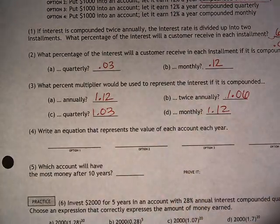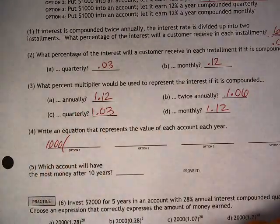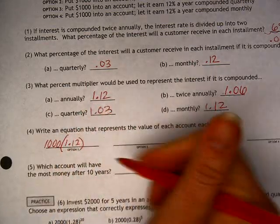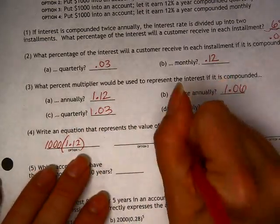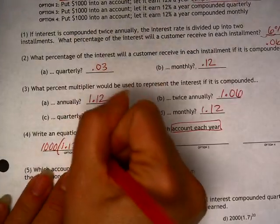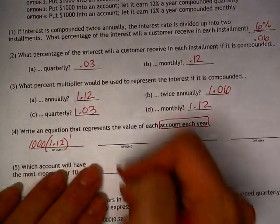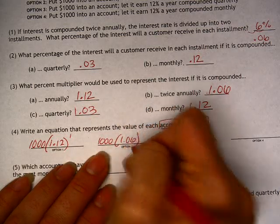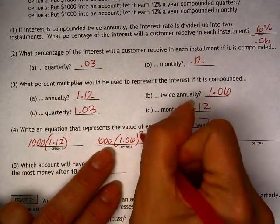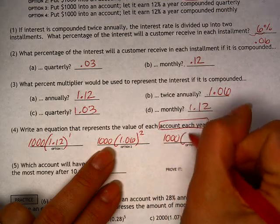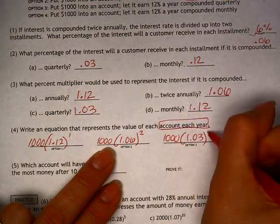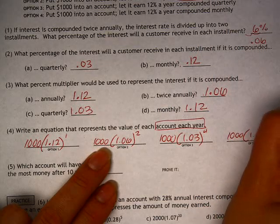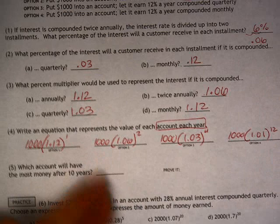So the equations: this is our principal, our initial amount. This is our multiplier. And the exponent is how many times it's going to be compounded in a year. In this case, it's going to be 1. This one is twice a year. This one is 4 times a year. And this one is 12 times a year.